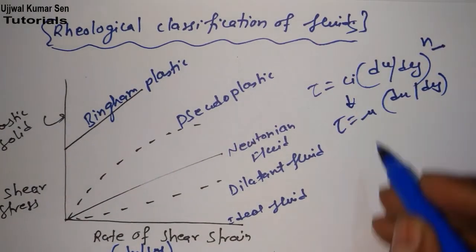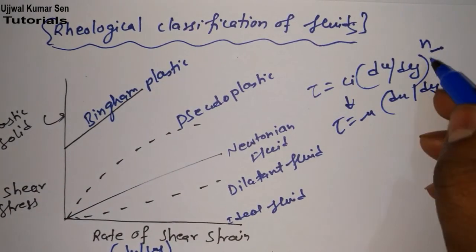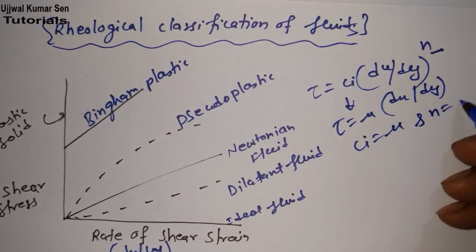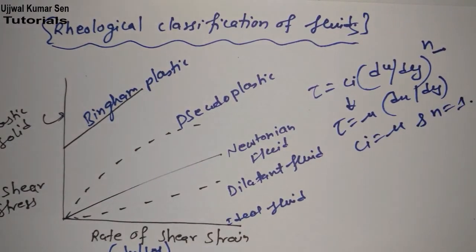When ci = μ and n = 1. When ci equals μ and n equals 1, then we can say that the fluid is a Newtonian fluid.